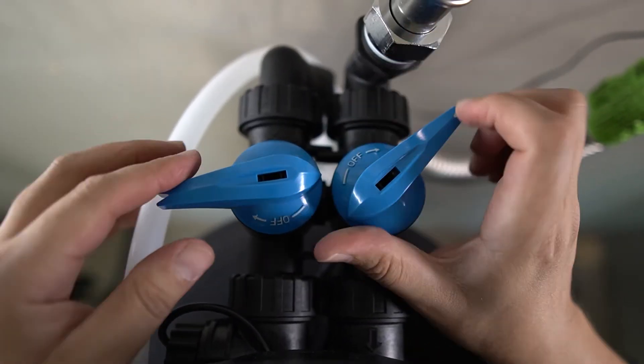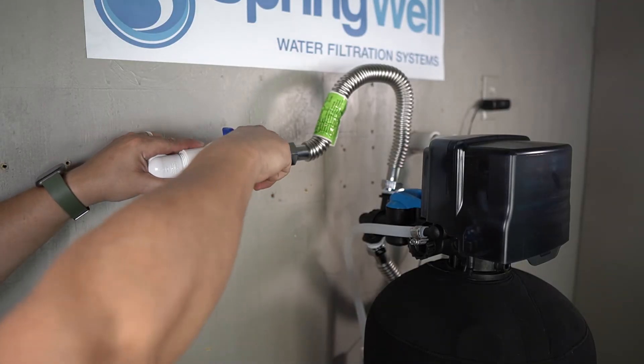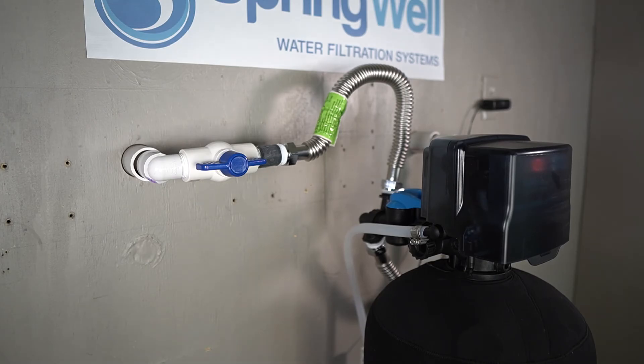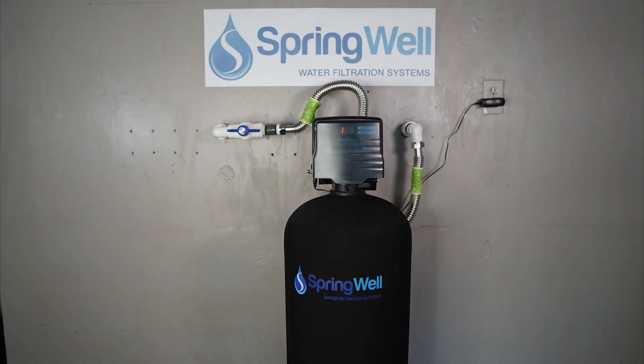The bypass on the back of the tank head can now be opened, and water to the system can now be restored. Allow water to flow through your system for 10 minutes. The calcite replenishment is now complete and your system is ready to use.